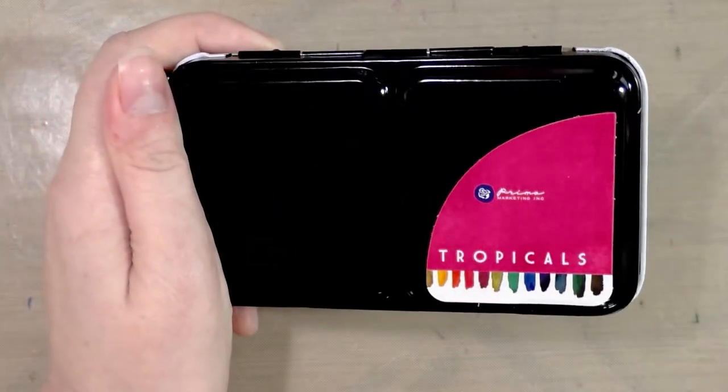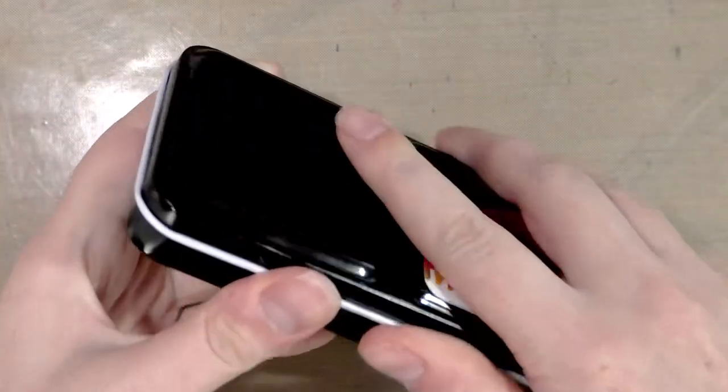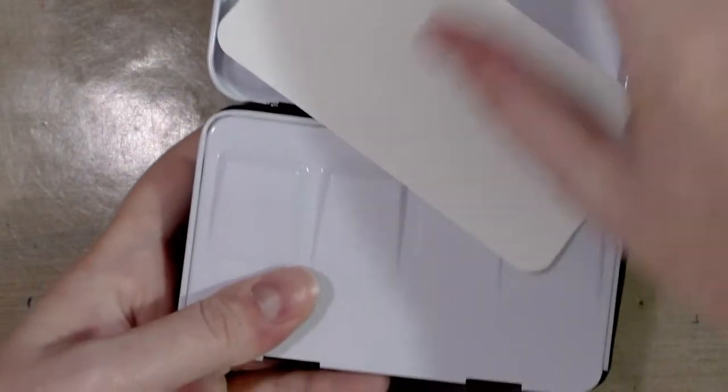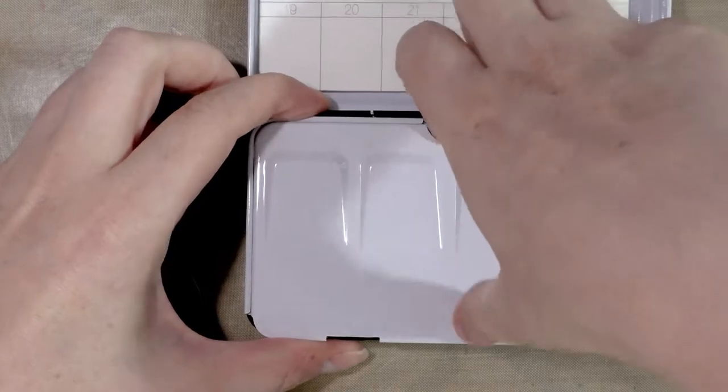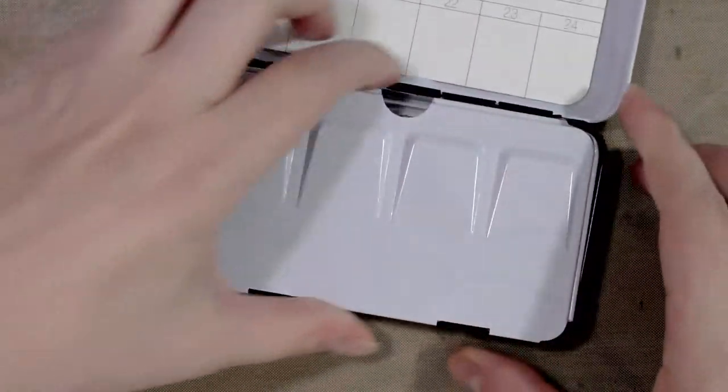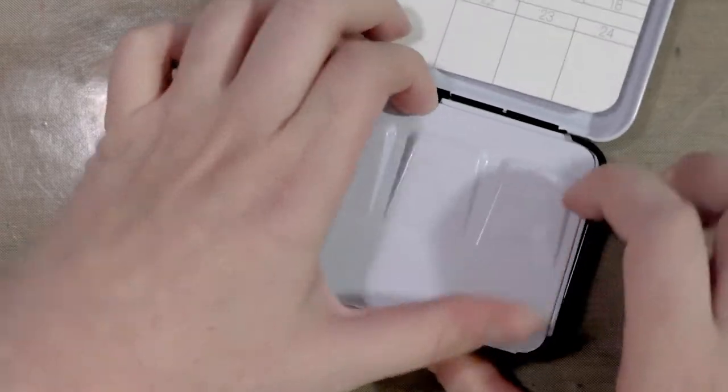Today we're going to assemble our palette. This is a small metal palette. It folds out. One of the problems with this palette is this does want to get stuck.